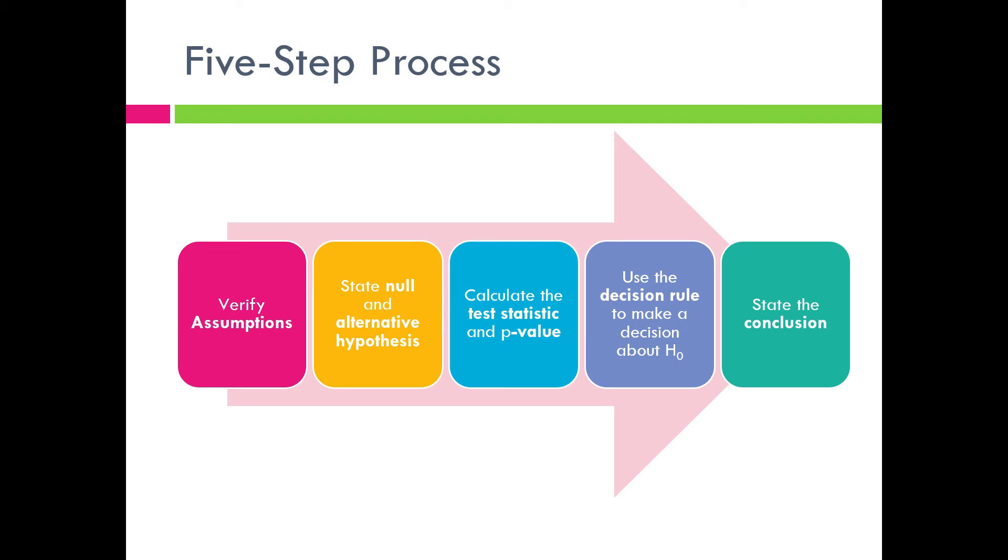First, we start off with verifying the assumptions. Then we state the null and the alternative hypothesis for the situation. We calculate the test statistic and the p-value. Then we use the decision rule to make a decision regarding our null hypothesis. And then the last thing we're going to do is we're going to state a conclusion.